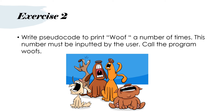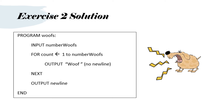Your turn to practice. Write pseudocode to print 'woof' a number of times. This number — the number of times — must be inputted by the user, and call the program woofs. Please pause the video here. The solution: program woofs. INPUT number woofs. FOR count going from 1 to number woofs. OUTPUT woof with no new lines so that the woofs all end up in a neat line. Then NEXT, and at the bottom just before the END statement, we've got OUTPUT new line and END.